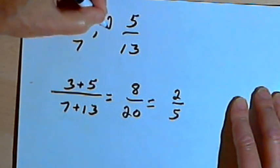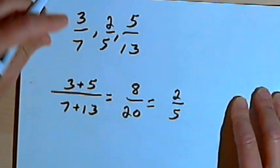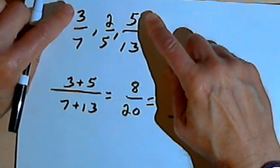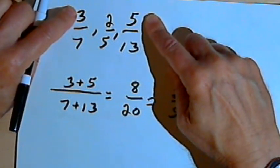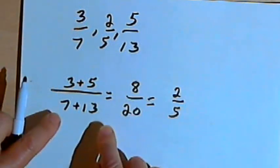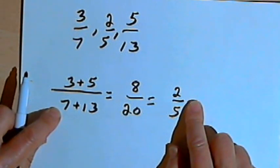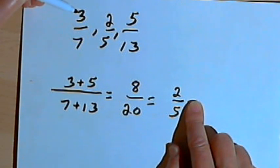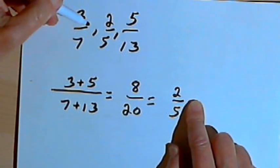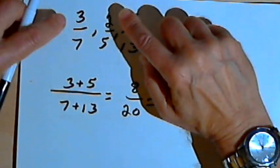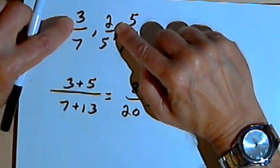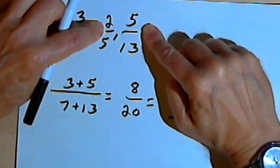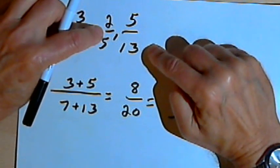So that means that 2 over 5 is a fraction in between these other two. The way this method works is add the two numerators, that's the new numerator. Add the two denominators, that's the new denominator. Simplify if you need to. The result is going to be a fraction or rational number that's in between your two original fractions. If you had to find more fractions, more rational numbers in between those two, you could take the same method and find a rational number in between 3 over 7 and 2 over 5, or you could use that method and find a rational number between 2 over 5 and 5 over 13.